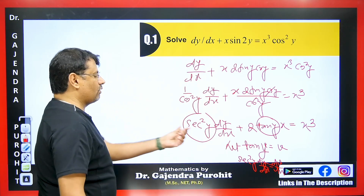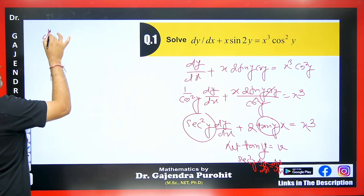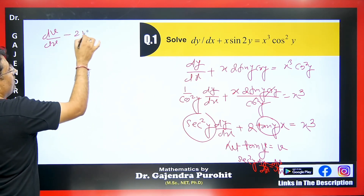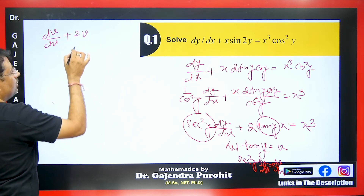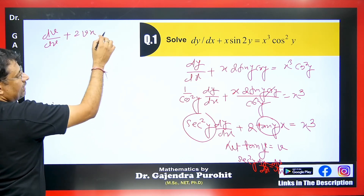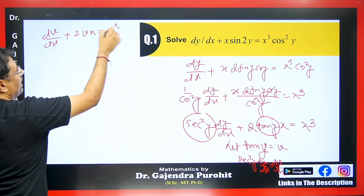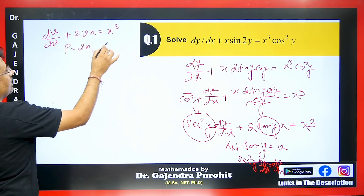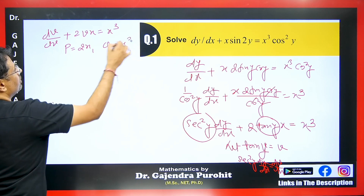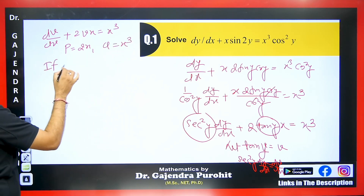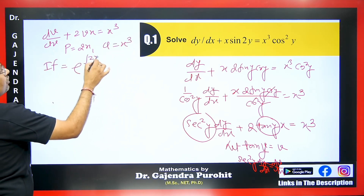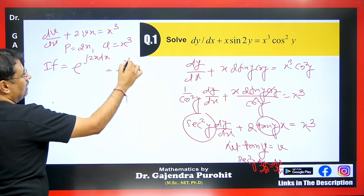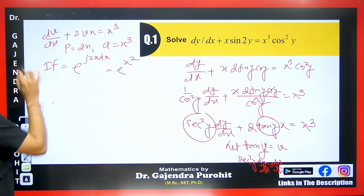Let tanY equal V. Then differentiating, sec²Y·dy/dx equals dV/dx. Substituting, in place of sec²Y·dy/dx we put dV/dx, and the equation becomes dV/dx plus 2VX equals X³. This differential equation is linear in V, where P equals 2X and Q equals X³. We find the integrating factor: e to the power of the integral of 2X dx, which gives e^(x²/2)... so the integrating factor is e^(x²).